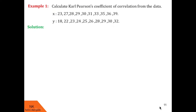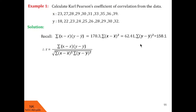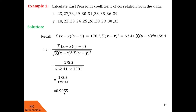Now let us carry forward these results and substitute them into the formula. We found summation of x minus x bar into y minus y bar is 178.3, summation of x minus x bar square is 202.9, and summation of y minus y bar square is 158.1. After substitution we get r equal to 178.3 upon square root of 202.9 into 158.1. Using a calculator, we find r is equal to 0.9955. Clearly this value is very close to 1, therefore the given data are positively correlated.